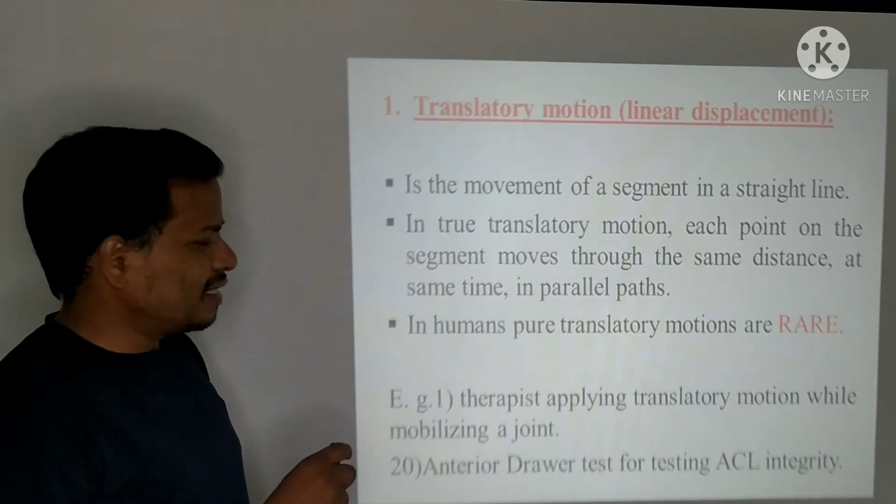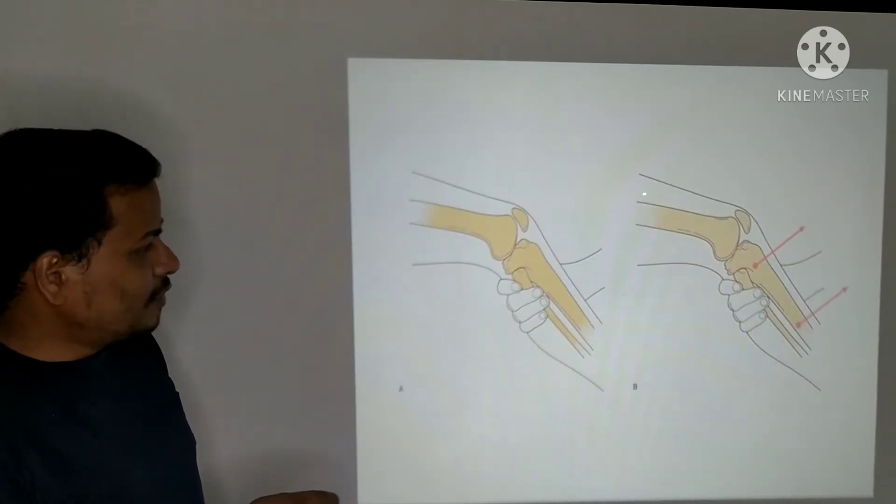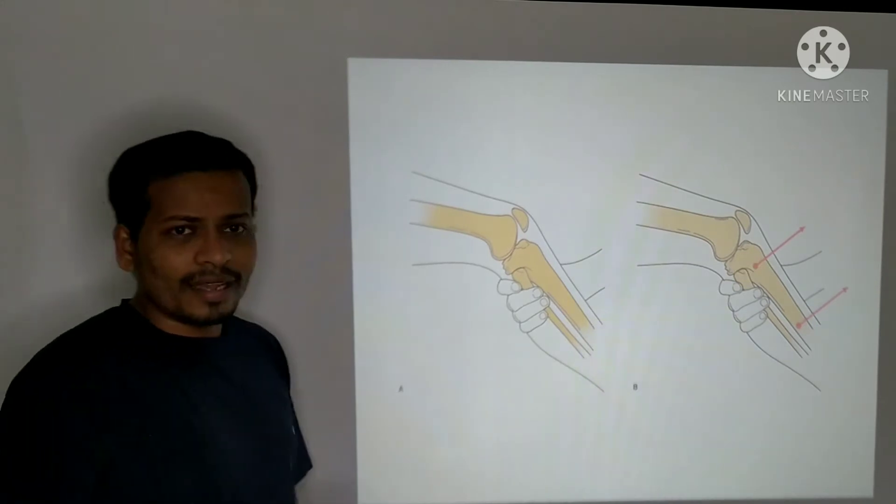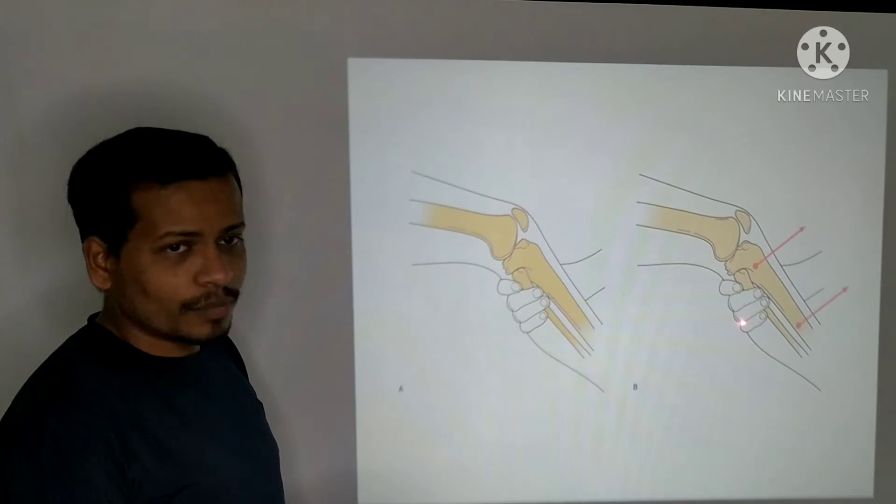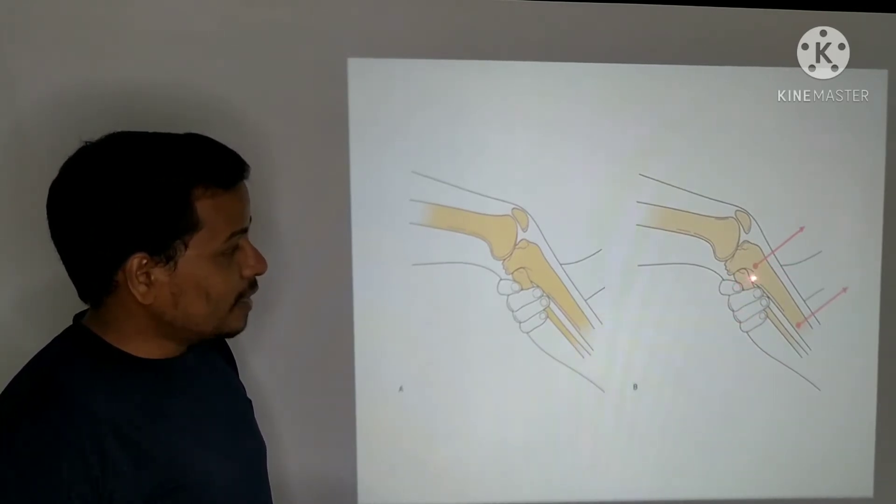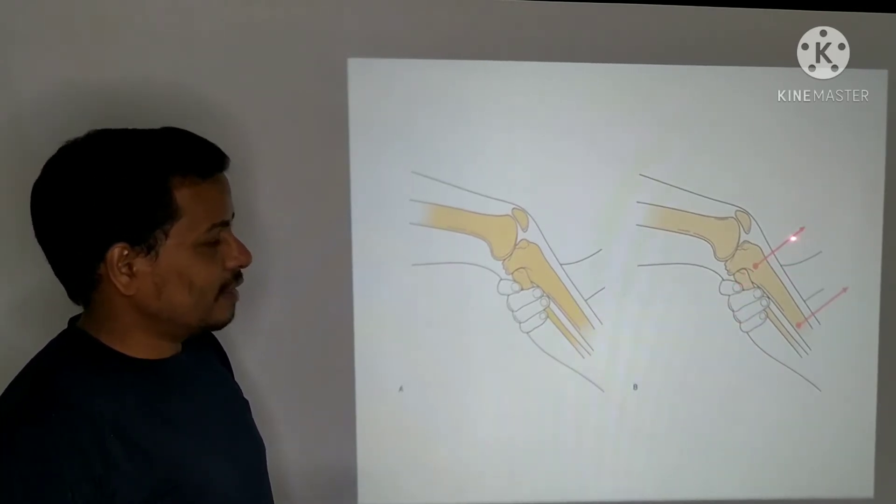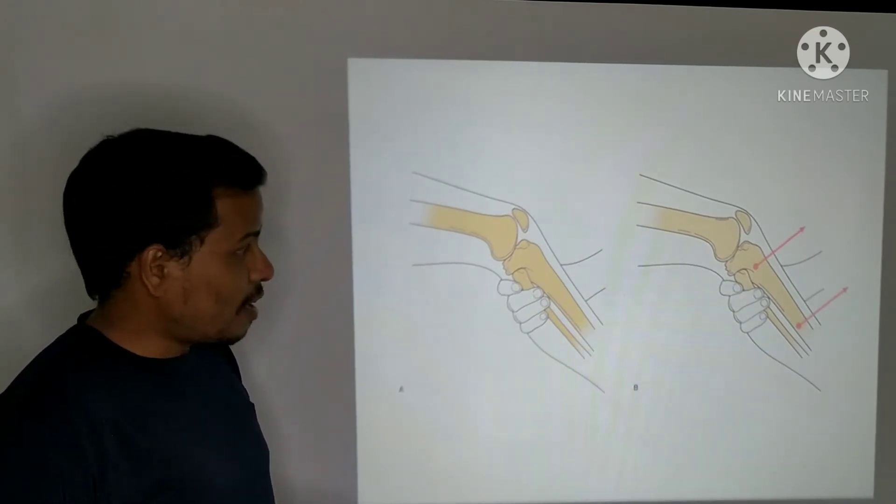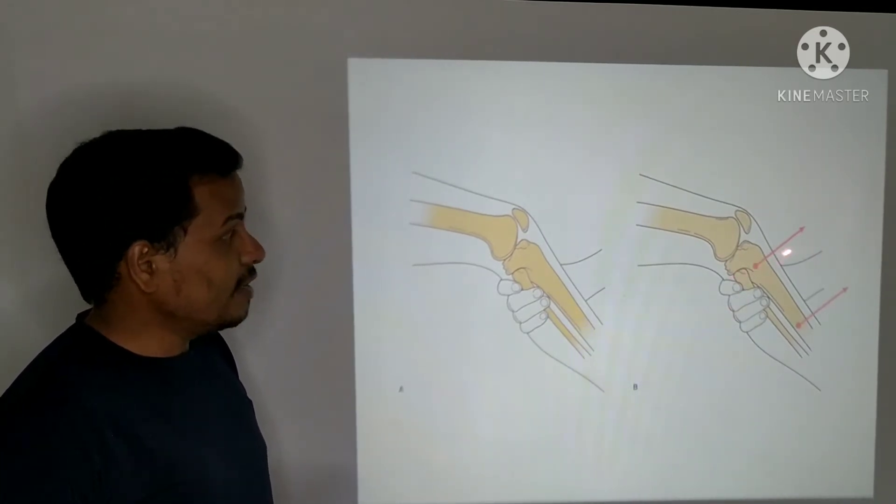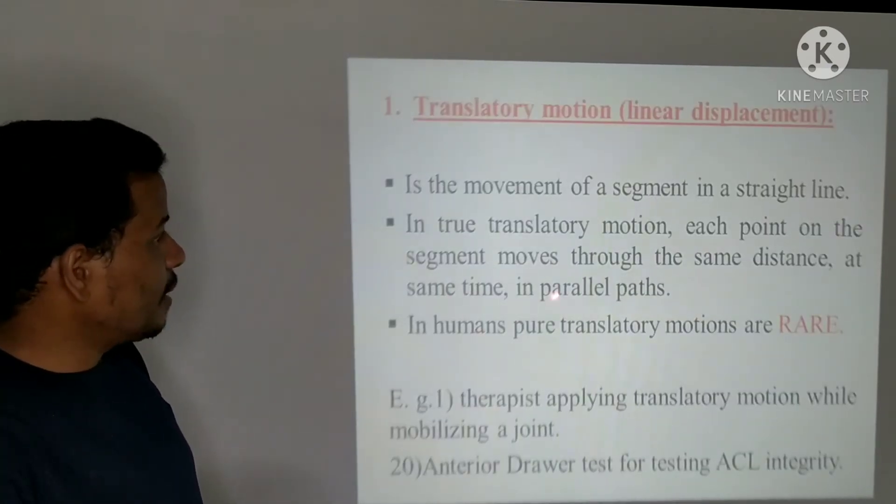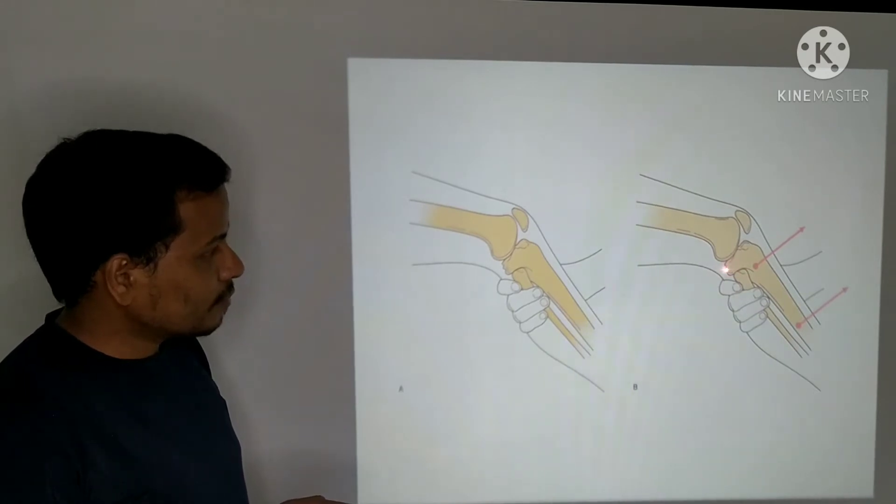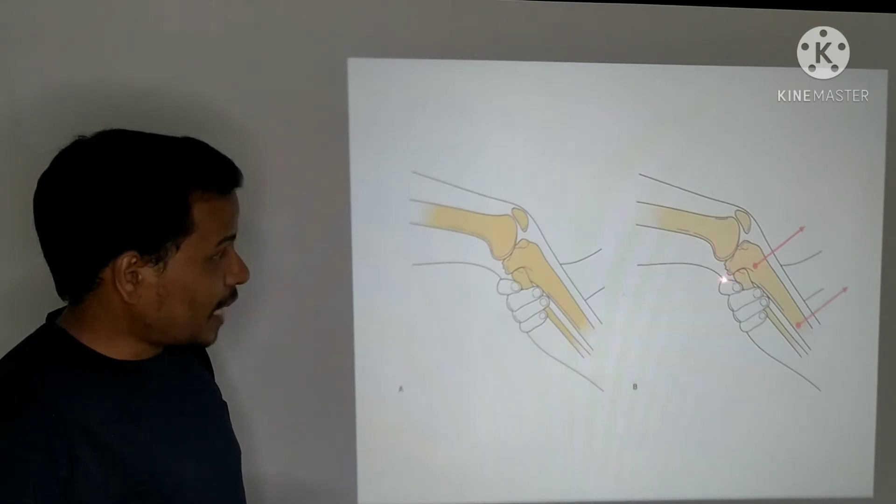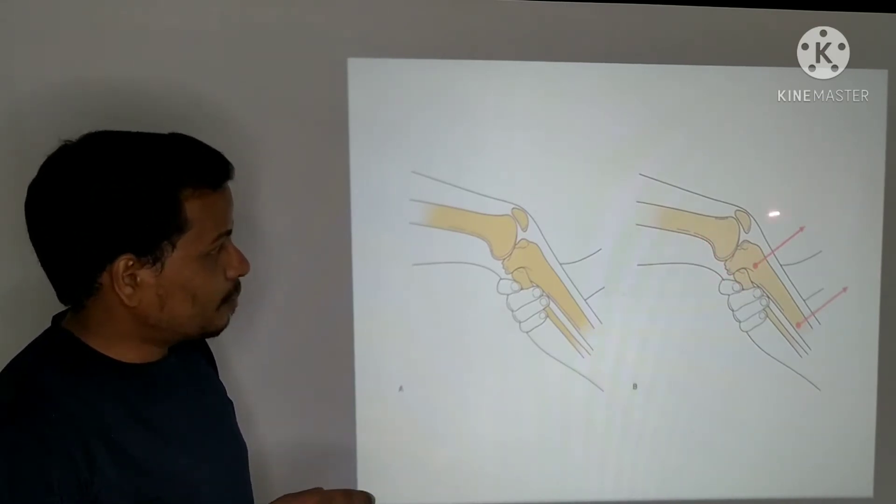Let us see in detail about this point. If you see this example, the therapist grasped the proximal tibia and fibula with his fingers behind and a thumb anteriorly and he is just translating or drawing the tibia, proximal tibia in an anterior direction. The same distance between the femur and the tibia occurs at the same time and in parallel paths.